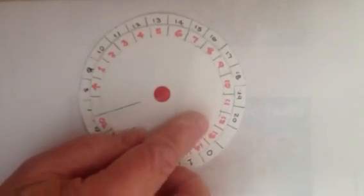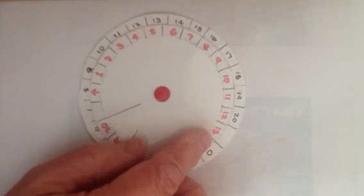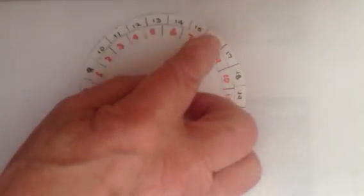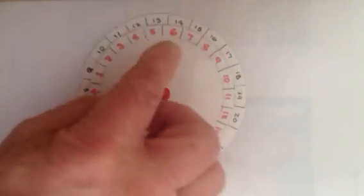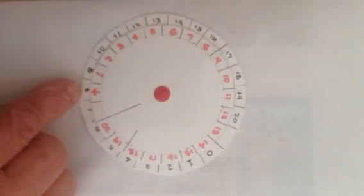Another one. 16 take away 8. 16 in the outer ring, 8 on the inner ring. 16 take away 8. Go round the arrow. Gives us 8.